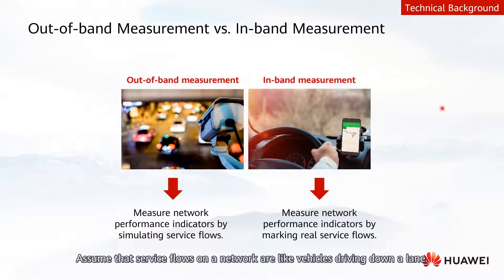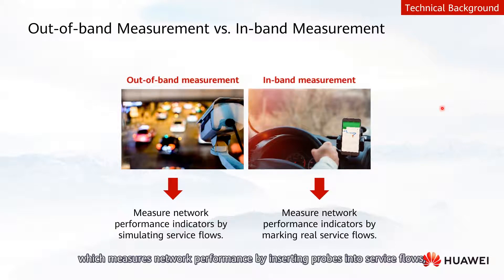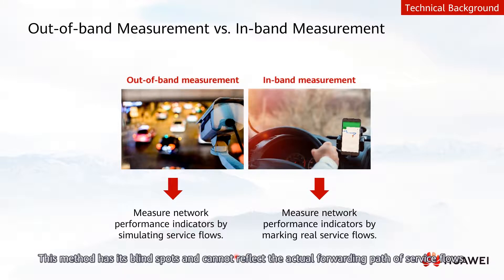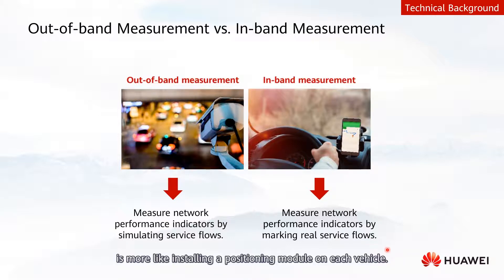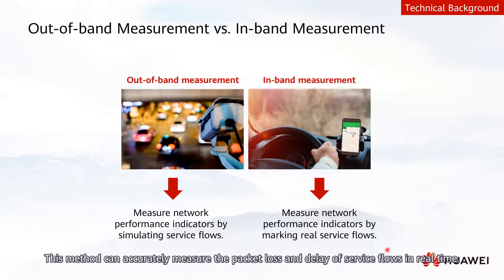Assume that service flows on a network are like vehicles driving down a lane. Traditional out-of-band measurement, such as TWAMP, which measures network performance by inserting probes into service flows, is similar to setting fixed monitoring points along the lane. This method has blind spots and cannot reflect the actual forwarding paths of service flows. In contrast, in-band measurement, which measures network performance by marking real service flows, is more like installing a positioning module on each vehicle. This method can accurately measure packet loss and delay of service flows in real-time.